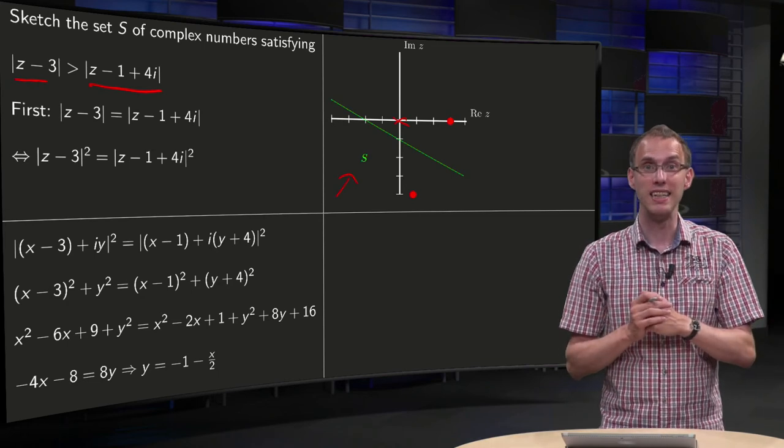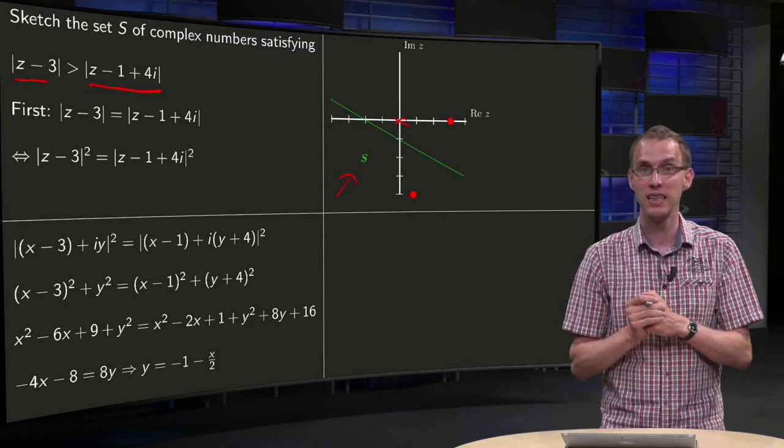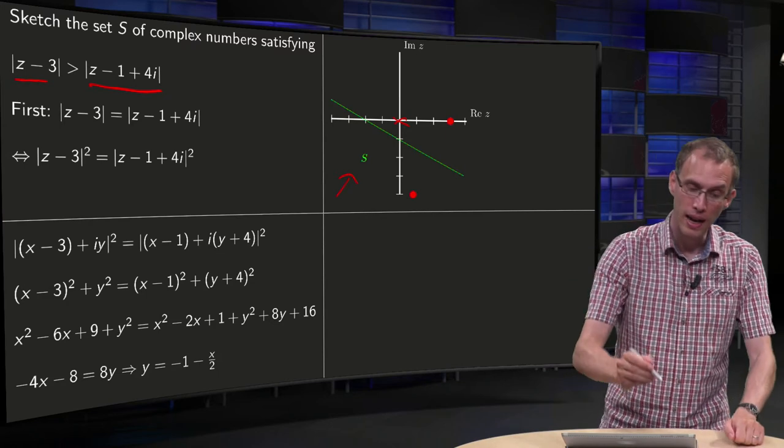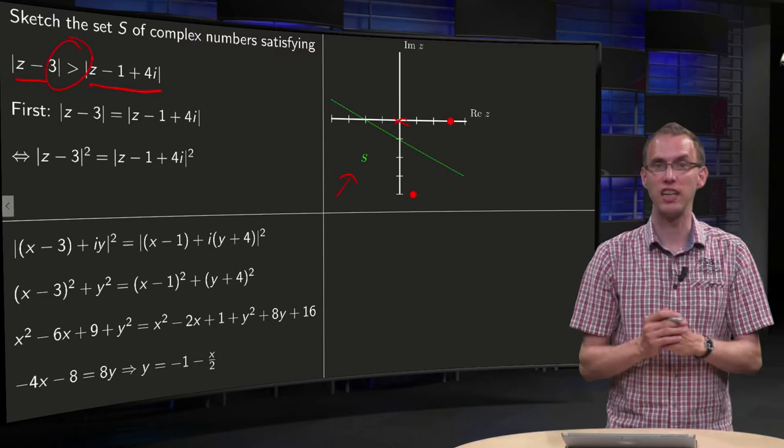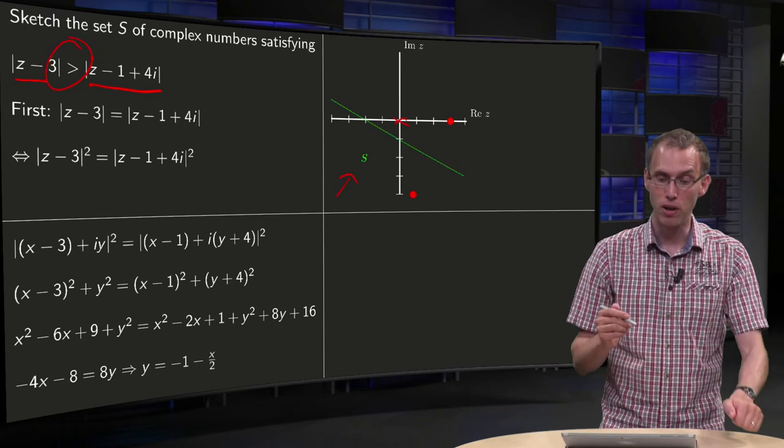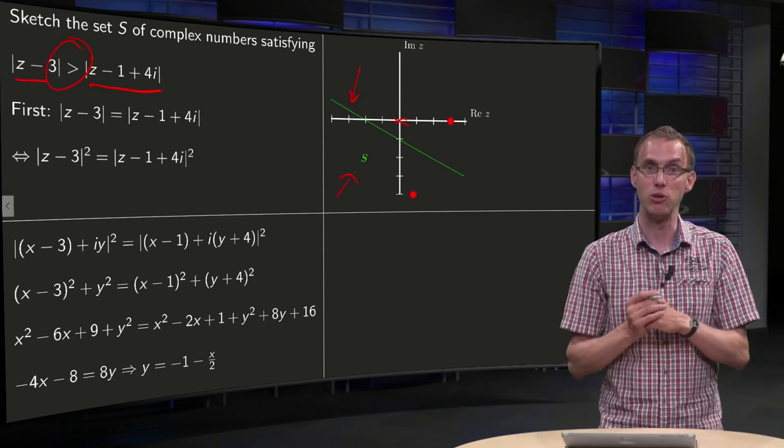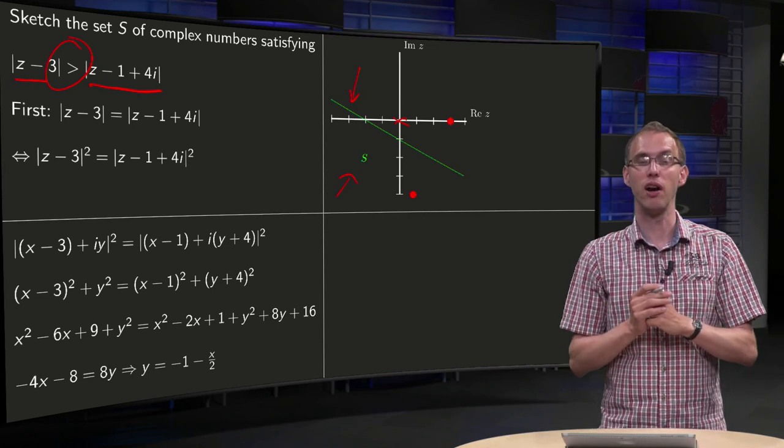Now is the line itself part of the region S? As you see here you have strict inequality, so not equality, so the line is not part of region S, and that's why it's drawn here in a dotted way.